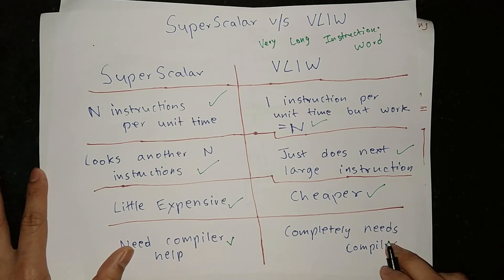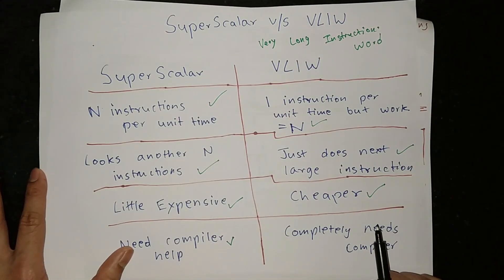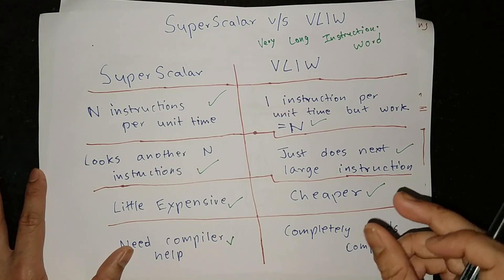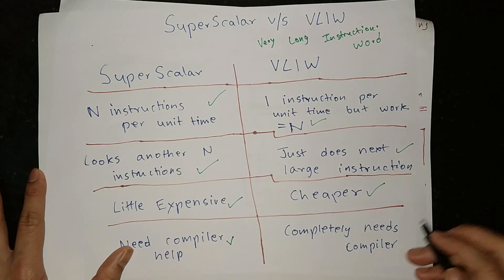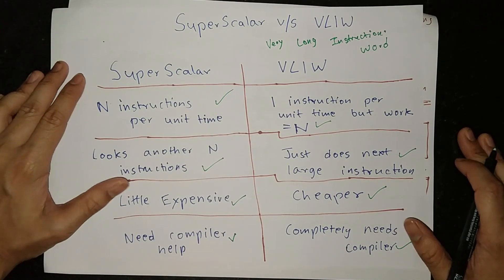So this compiler doesn't do anything, but this compiler needs work because there is a big instruction that keeps doing small instructions and keeps doing different units. So there is a lot of difference between these two that you can understand.